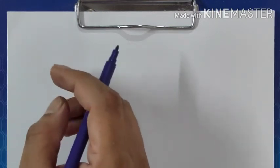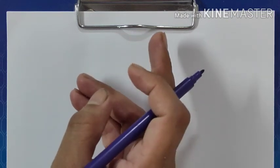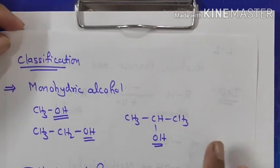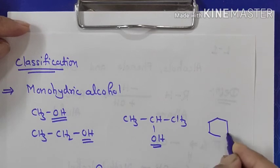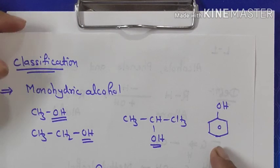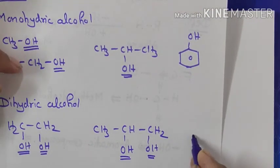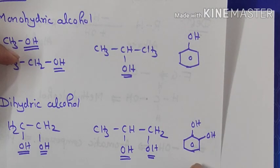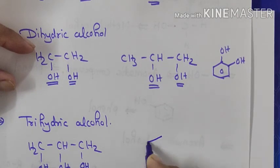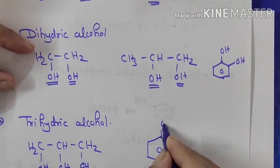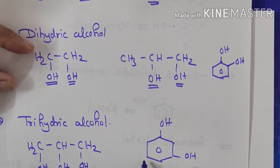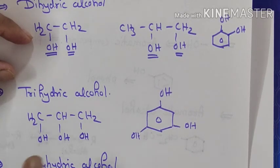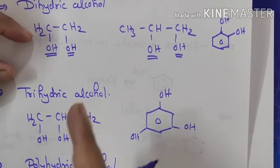This classification of monohydric, dihydric, and trihydric is also applicable to phenol. For example, a phenol with one OH is monohydric phenol. If two OH groups are present on the benzene ring, it is dihydric phenol. With three OH groups, it is trihydric phenol. So monohydric, dihydric, trihydric can be classified for alcohol as well as for phenol.